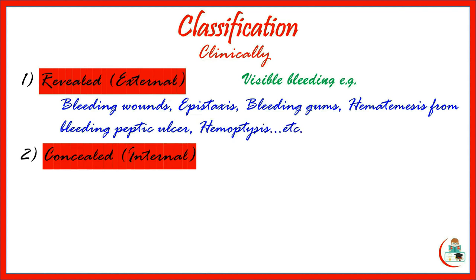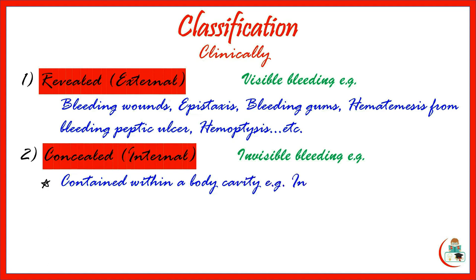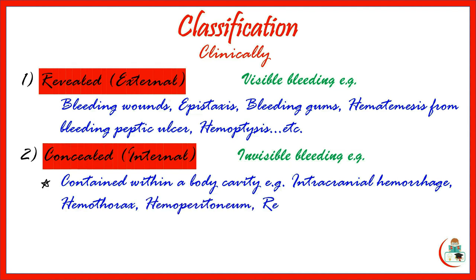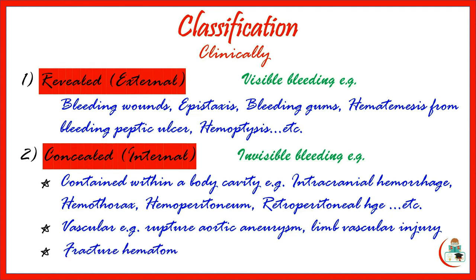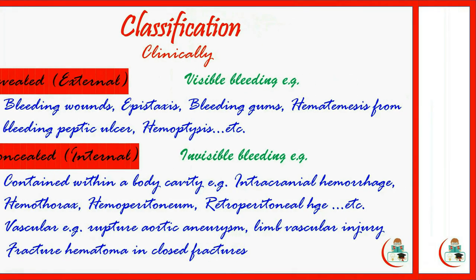The concealed hemorrhage is invisible, such as bleeding contained within a body cavity — for example, intracranial hemorrhage, blood in the pleural cavity or hemothorax, blood in the peritoneal cavity or hemoperitoneum, retroperitoneal hemorrhage or hematoma, etc. For vascular bleeding, examples include fractured aortic aneurysm and limb vascular injury with intact skin. Another example is fracture hematoma in closed fractures.